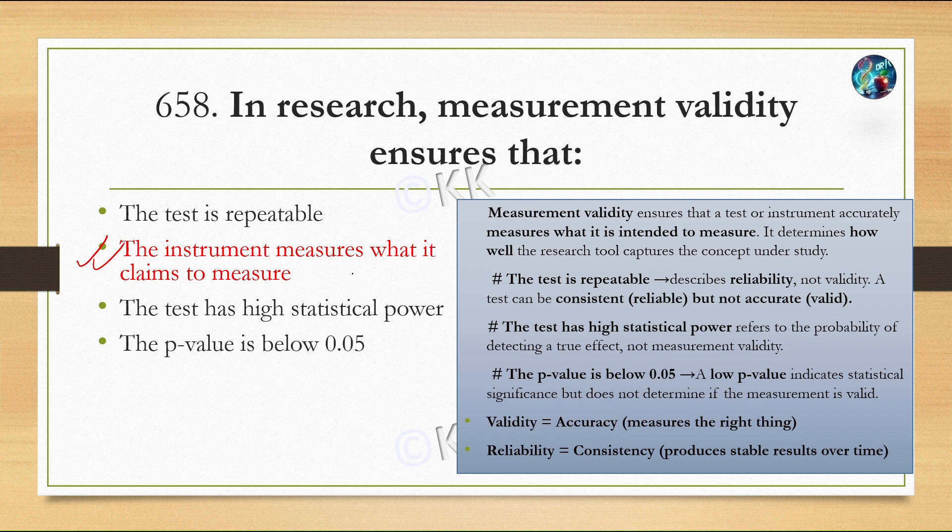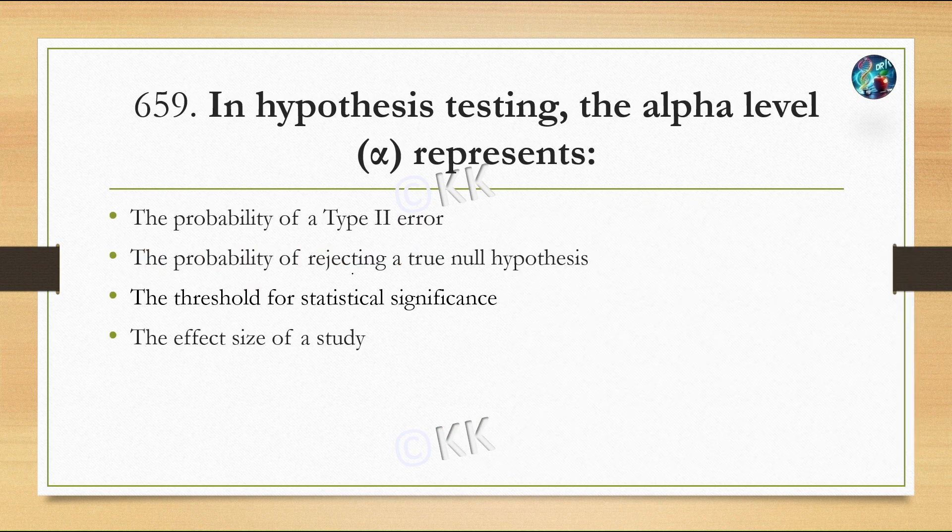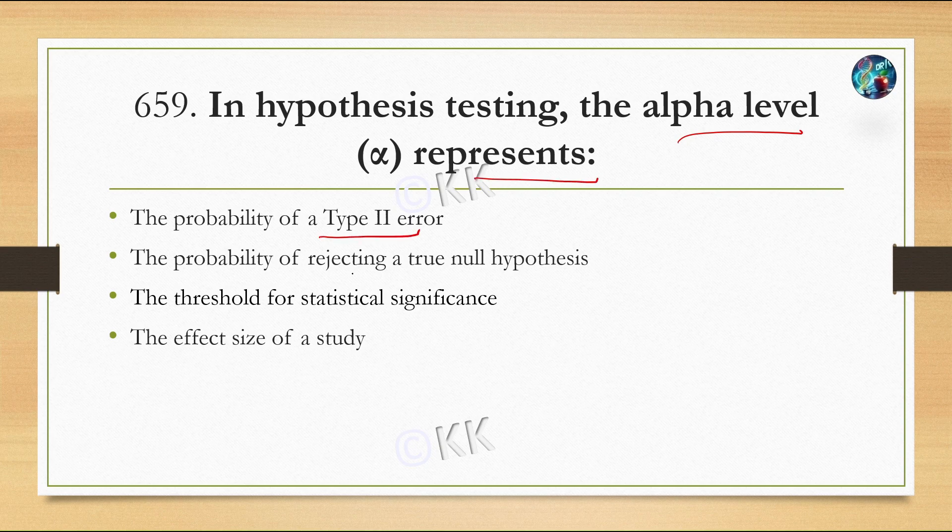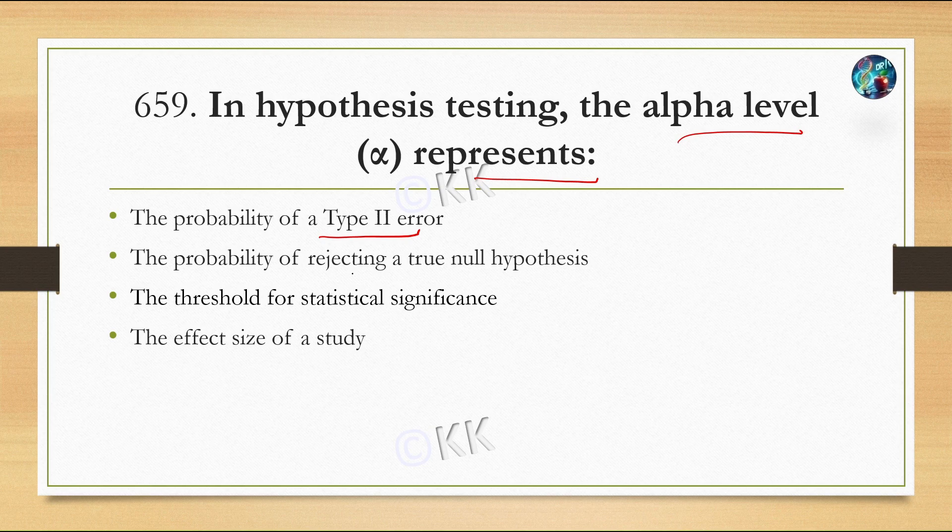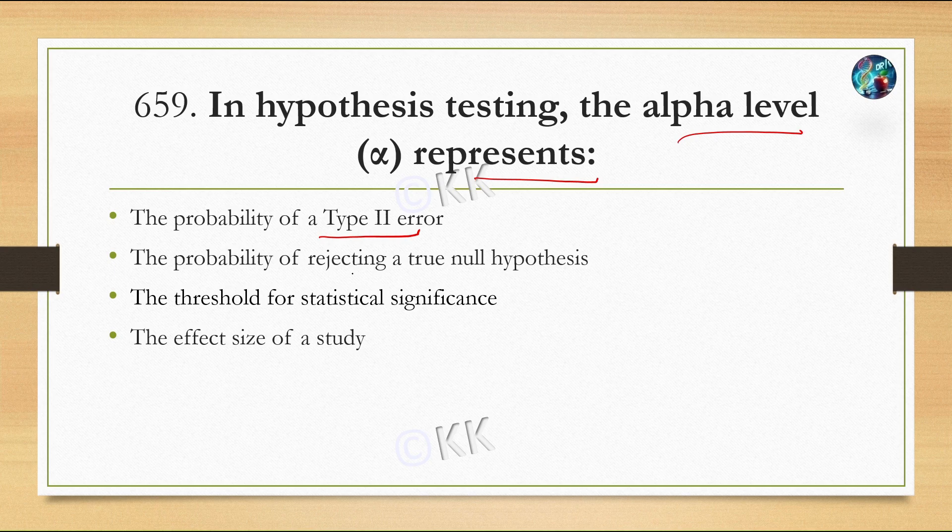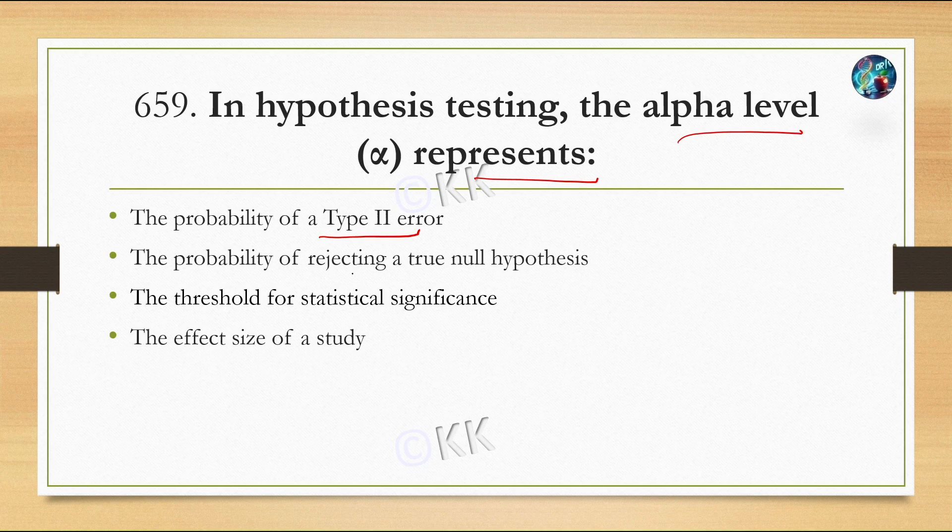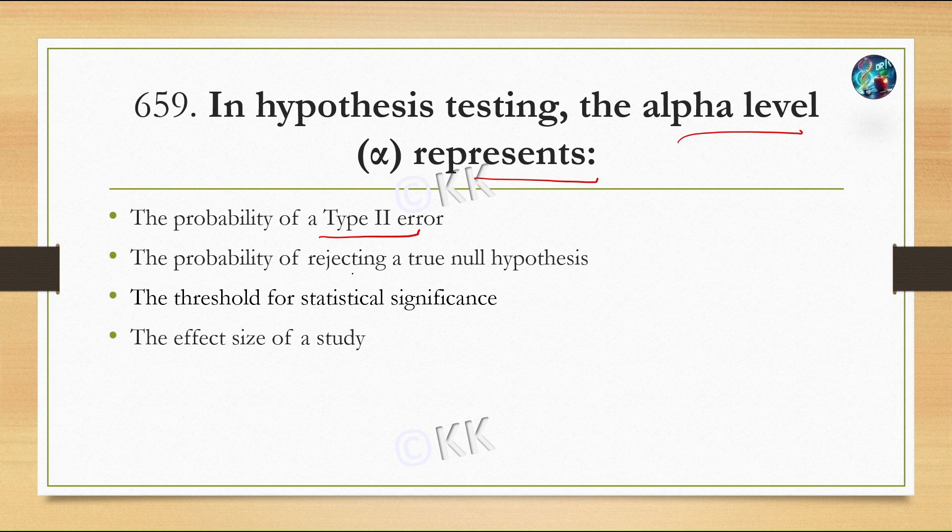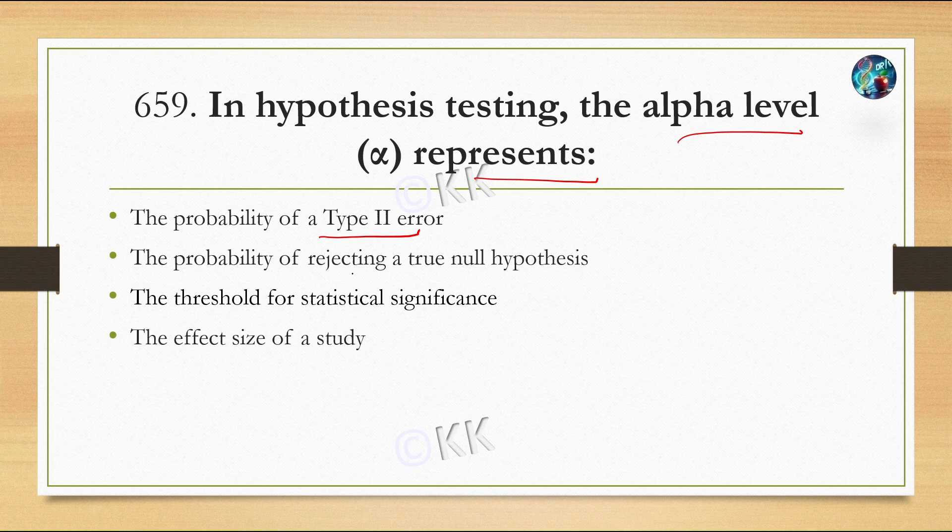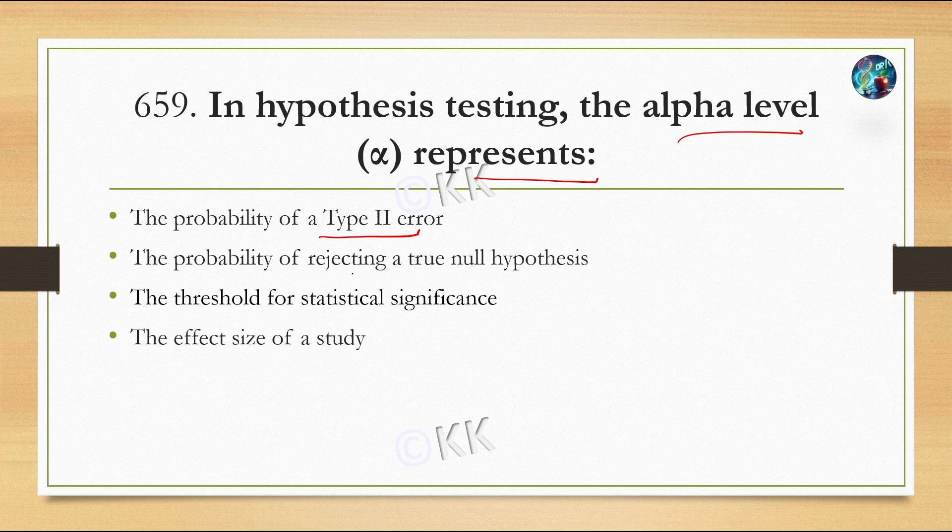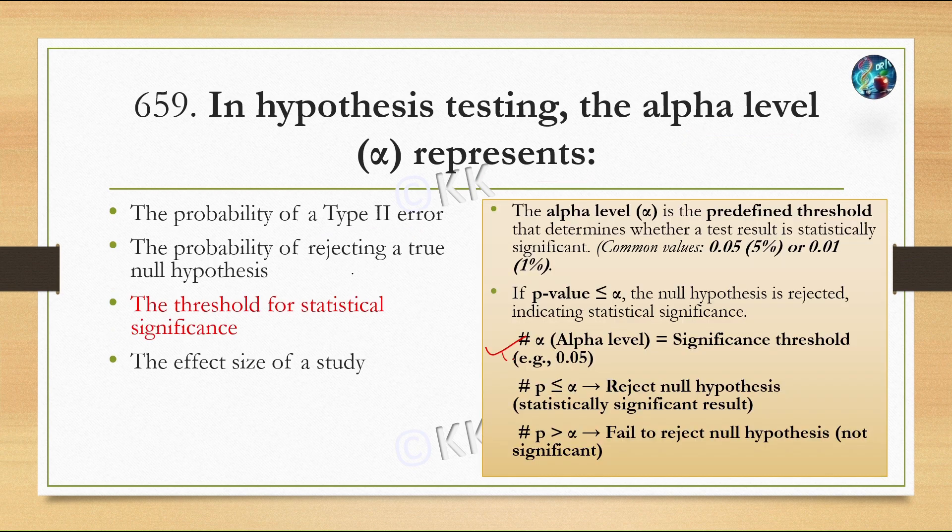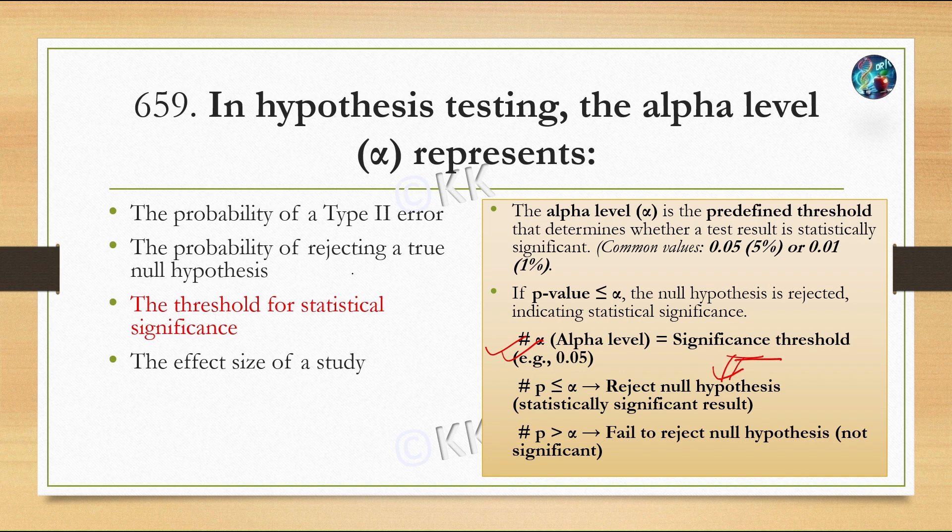Next question: In hypothesis testing, the alpha level represents: Option A, the probability of Type 2 error; Option B, the probability of rejecting a true null hypothesis; Option C, the threshold for statistical significance; Option D, the effect size of the study. The correct option is Option C, the threshold for statistical significance. Alpha level is the predefined threshold that determines whether the test result is statistically significant. If p-value is less than or equal to alpha, we reject the null hypothesis, indicating statistical significance. If p-value is greater than alpha, we fail to reject the null hypothesis, which is statistically not significant.